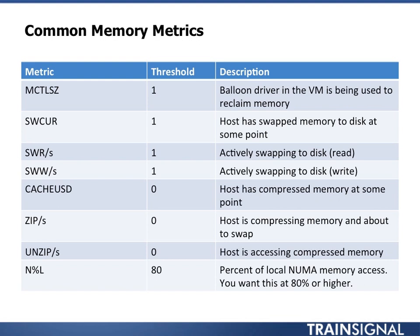N% L talks about local NUMA access — the percent of time that memory access is local. With NUMA, the CPU accesses memory directly; if it's not local, it has to go through another CPU, adding latency. A threshold to look at is 80% — you want memory access to be local at least 80% of the time. If it's 60, 50, or lower, there are issues. Look at how your VMs are configured and your memory configuration in the server to improve this.